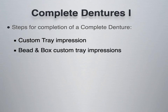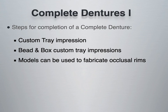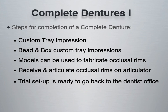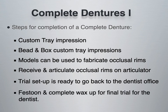On those preliminary casts created from the preliminary impressions, we fabricate something called a custom tray, which we're going to talk about today. With that custom tray, the clinician then takes a custom tray impression, which is returned to the dental laboratory where a technician beads, boxes, and pours it. On those models we fabricate something called an occlusal rim. We then receive and articulate those occlusal rims on an articulator — a piece of equipment that simulates the opening and closing of the human jaw. Then we set teeth in wax, do a trial setup, and eventually finish and process the case.